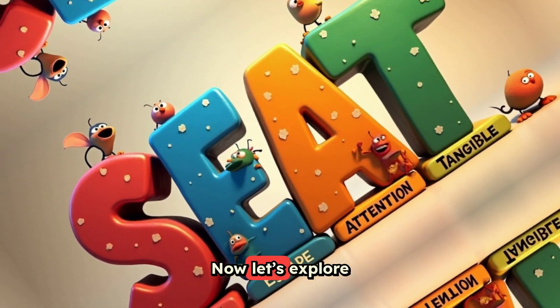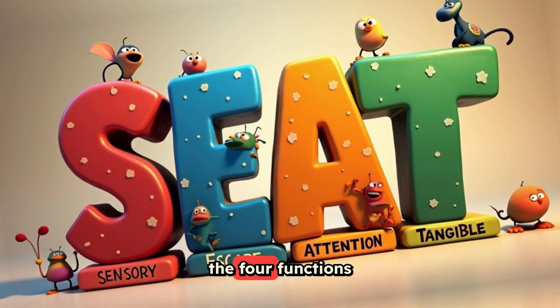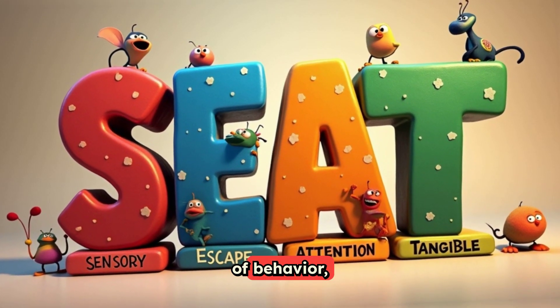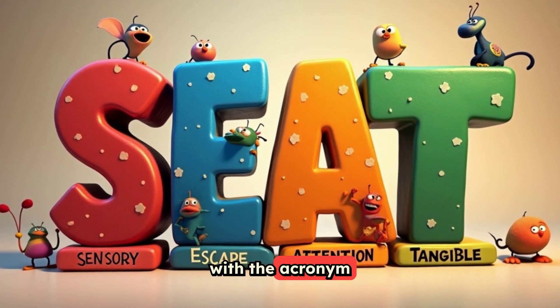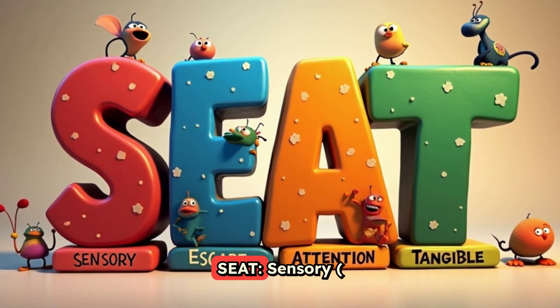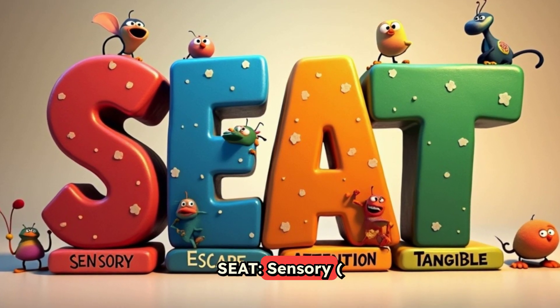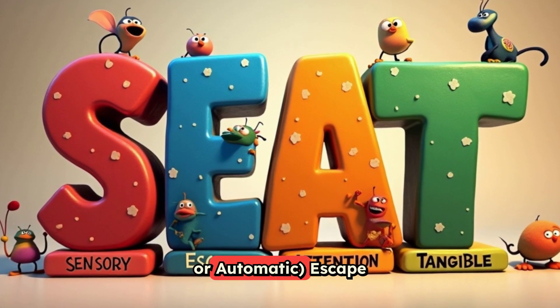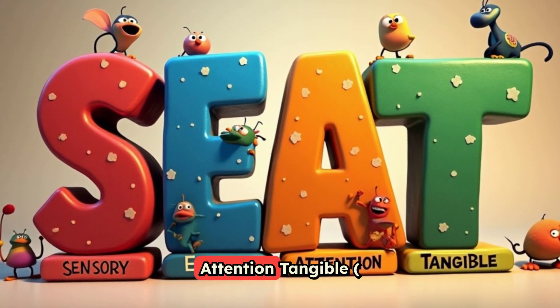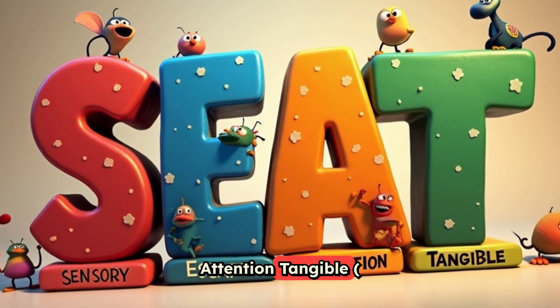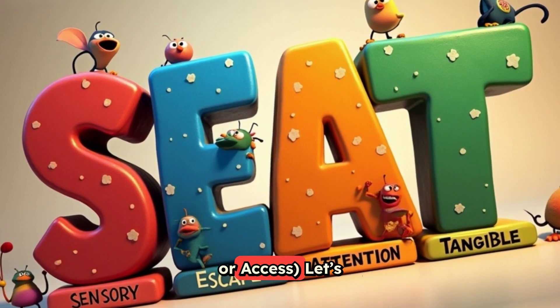Now let's explore the four functions of behavior, which we can remember with the acronym SEAT: Sensory or Automatic, Escape, Attention, and Tangible or Access.